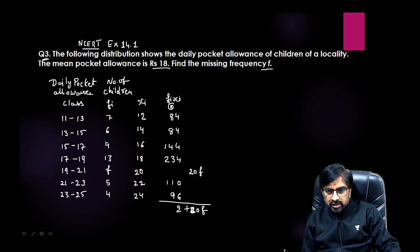Now 5 into 22 is 110, and 8 into 24 is 96. We need to add this, so at last plus 20f. When we add these: 84, 84, 144, 234, 110, and 96, we get 752 plus 20f. This will be your summation of fi xi.